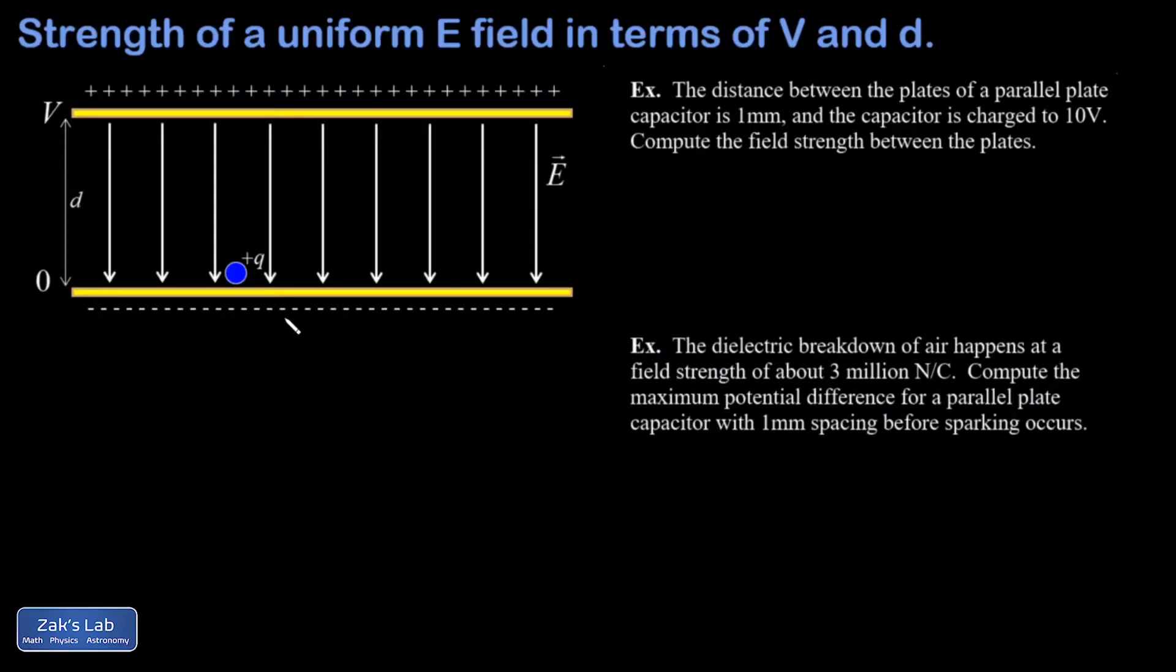In this video, we find the way to express the strength of a uniform electric field. This is critical - it must be uniform for this to work - in terms of potential difference and the distance between the low and high sides of that potential difference. Where do we see uniform electric fields? Between the plates of a parallel plate capacitor, which is the model we're working with here.